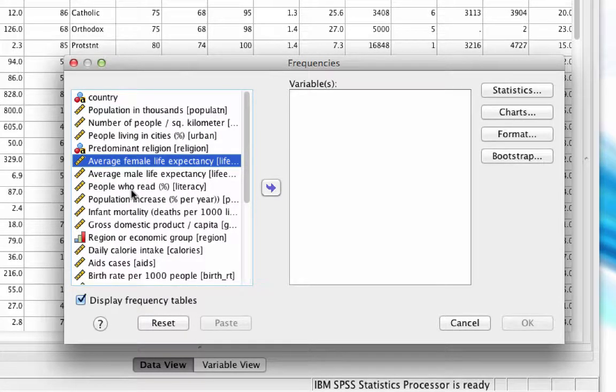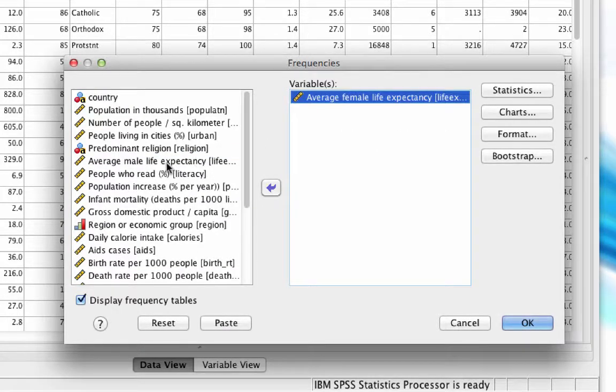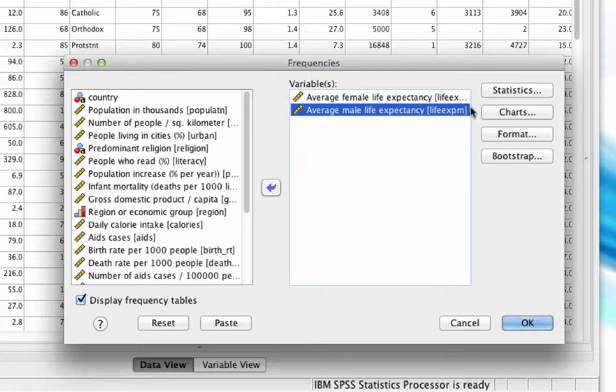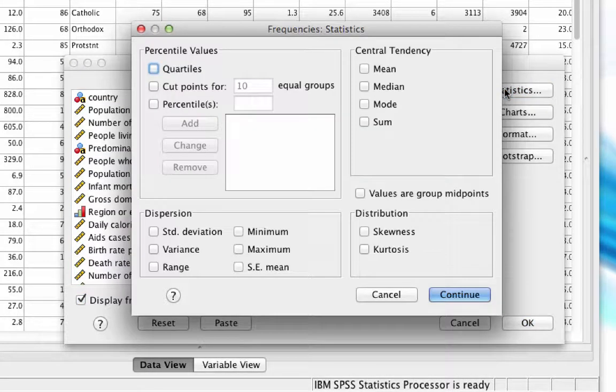We are interested in the variables average female life expectancy and average male life expectancy. Drag those into the variables box. Now click on statistics. In order to calculate a five number summary, we will need the minimums, the maximum, quartiles, and the median.